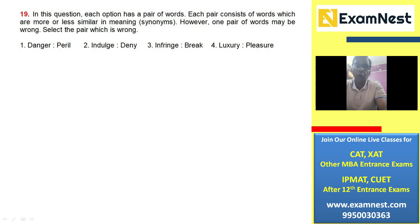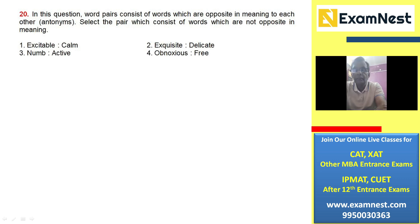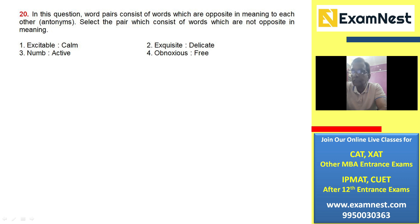Take the next sentence. In this question, word pairs consist of words which are opposite in meaning — that is, they are antonyms. Select the pair which consists of words which are NOT opposite in meaning. Most of them are opposites — numbers one, three, and four. The correct answer is 'exquisite and delicate' — they mean more or less the same; they are synonymous. So number two is the answer; the others are antonyms.